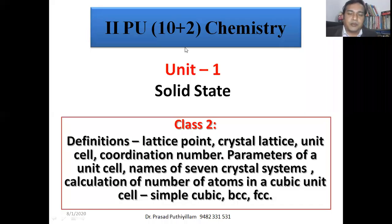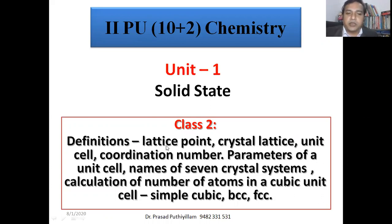Hi, it's me Dr. Prasad. This is the second class for second PU, that is plus two chemistry, unit one: solid state. Here I'll explain definitions of lattice point, crystal lattice, unit cell, coordination number, the parameters of a unit cell, names of the seven crystal systems, and calculation of numbers of atoms in a cubic unit cell — that is simple cubic, BCC, as well as FCC.